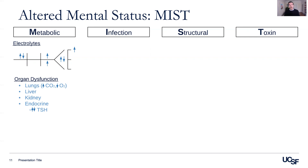One other endocrine disorder to keep in the back of your head is issues with the adrenal glands, such as adrenal insufficiency or states of glucocorticoid excess, such as Cushing syndrome.